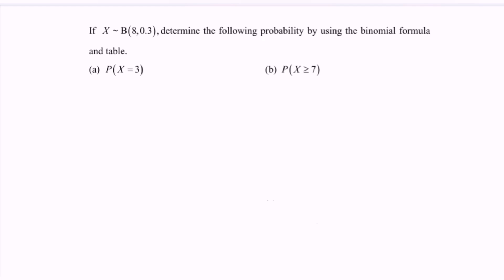Hello everyone, welcome to my channel. In this video, I'm going to discuss the example for special probability distribution for the part binomial distribution. The question states: if X is binomially distributed with n=8 trials and the probability of success is 0.3, determine the following probabilities using the binomial formula and the table.